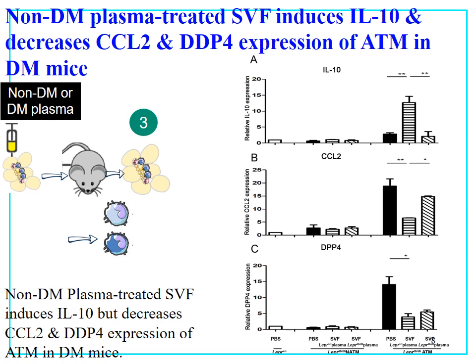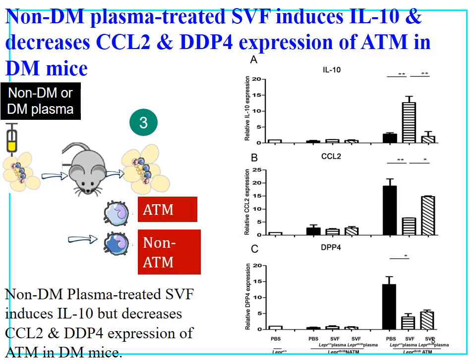Next, we harvested cells from the adipose tissue and purified adipose tissue macrophages and non-adipose tissue macrophages to evaluate which cells had been changed by injection of treated SVF. We found that adipose tissue macrophages were the main responders. IL-10 in db/db mice increased after injection of non-diabetic plasma-treated SVF, while SVF treated with diabetic plasma showed no change. The same pattern was observed for CCR2 and DPP4, suggesting that adipose tissue macrophages are the main responders to the treated SVF.